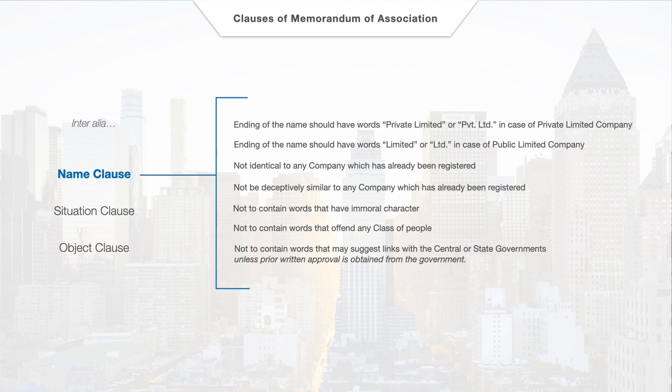Finally, the company must not be in contravention of any laws of India. For instance, one cannot use words that are morally wrong or words that may be offensive to a class of persons. Also, the name cannot contain words that may mislead people to believe that the company is linked with the central or state government, unless such use has been approved by the government.